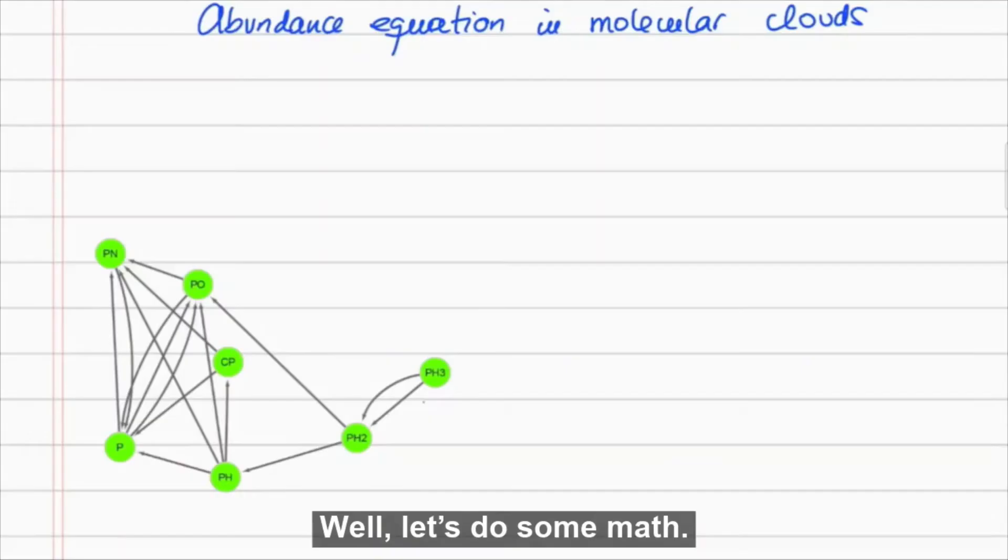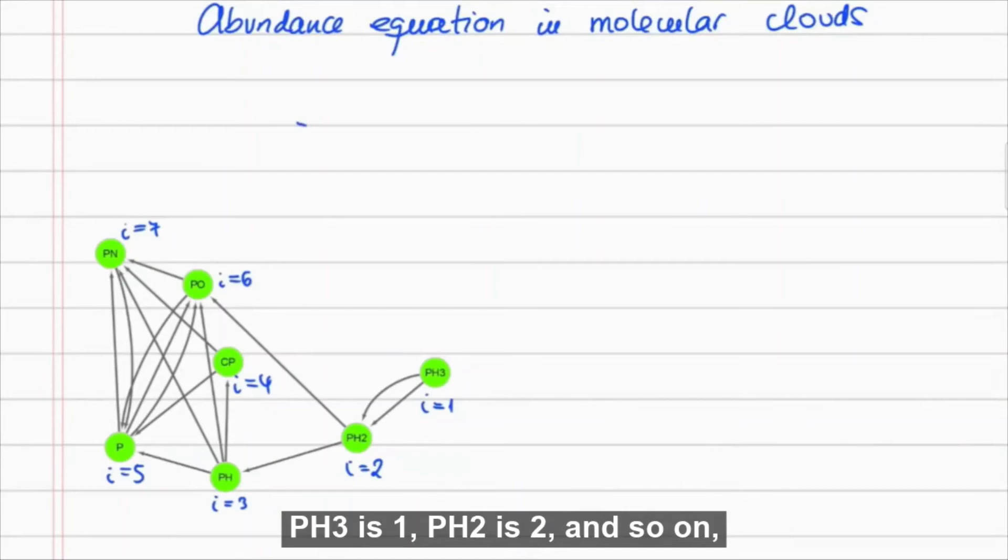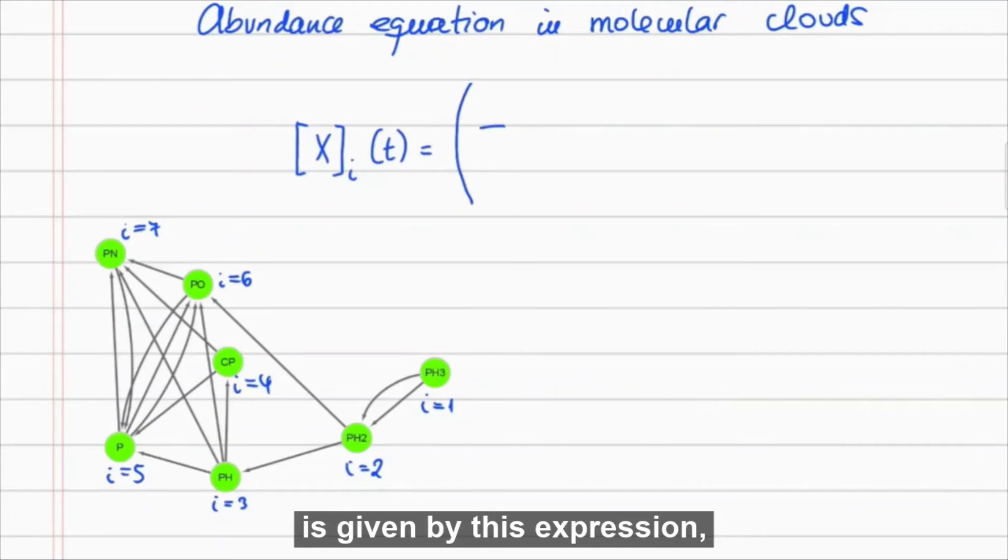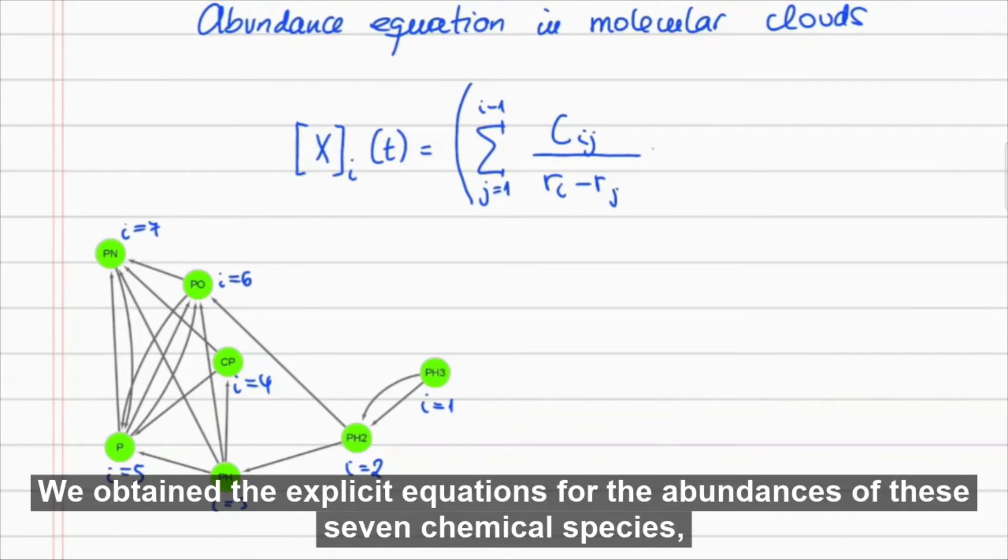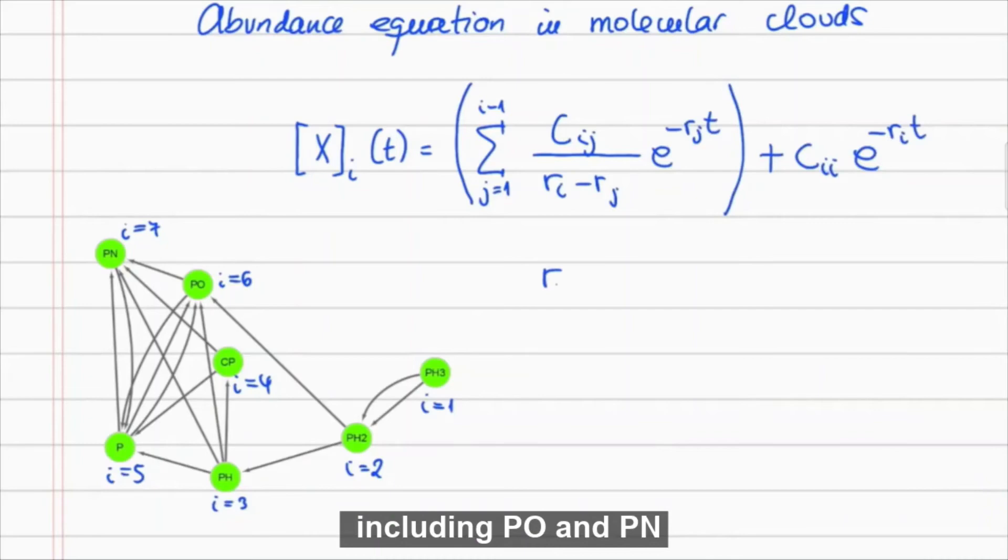Well, let's do some math. If we give a number to each molecule, PH3 is 1, PH2 is 2, and so on, it turns out that the abundance of the molecule i over time is given by this expression, where c and r are constants. We obtained the explicit equations for the abundances of these seven chemical species, including PO and PN.